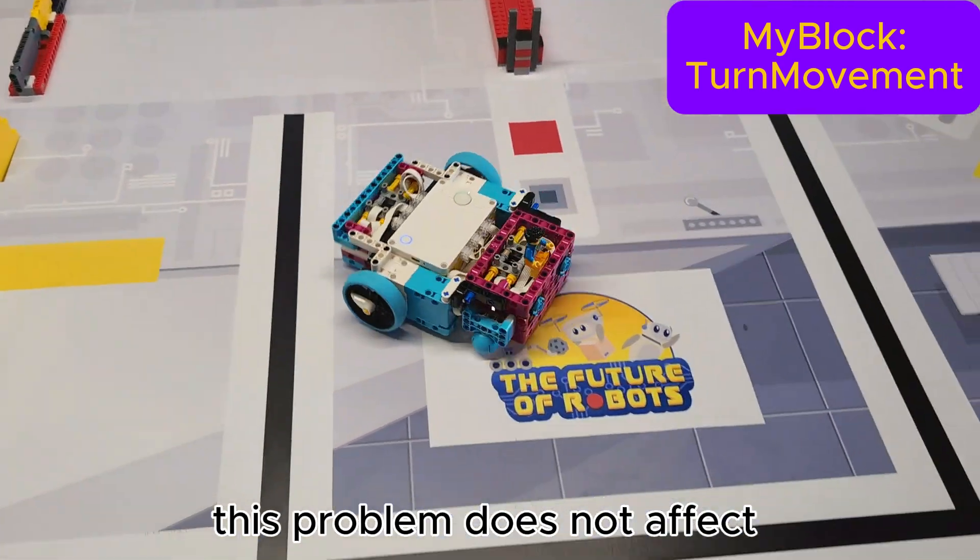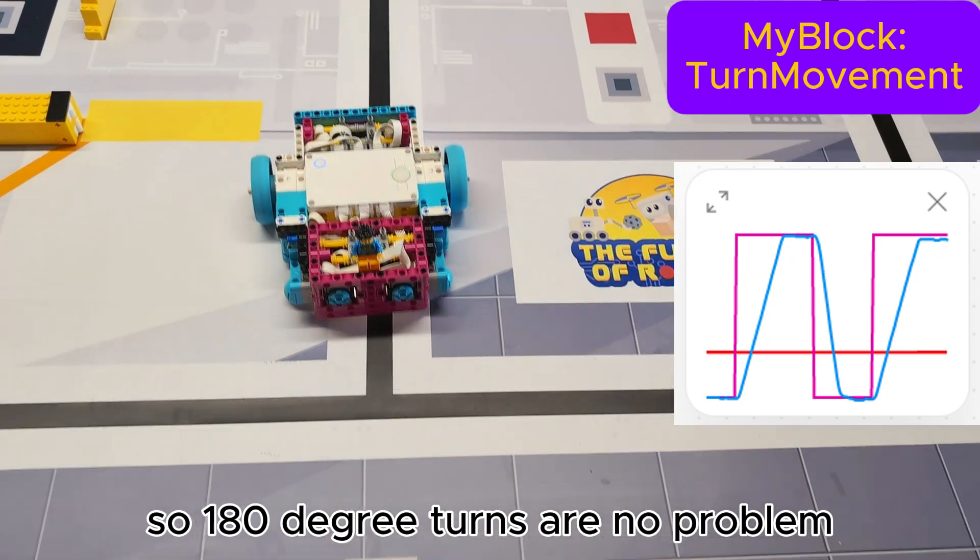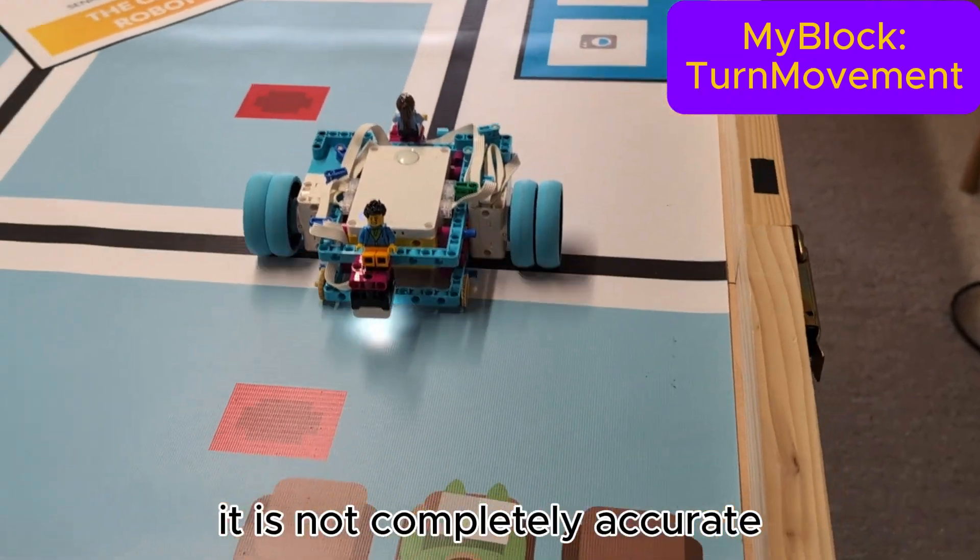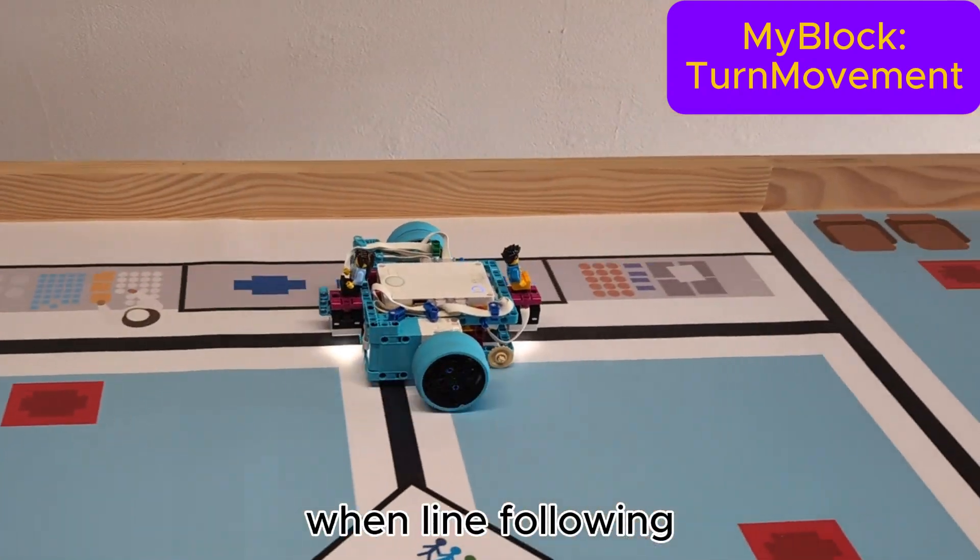This problem does not affect the turn movement my block, so 180 degree turns are no problem. It is not completely accurate, but it is very useful for corners and junctions when line following.